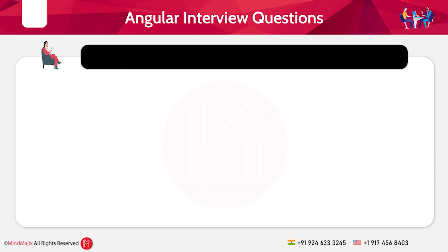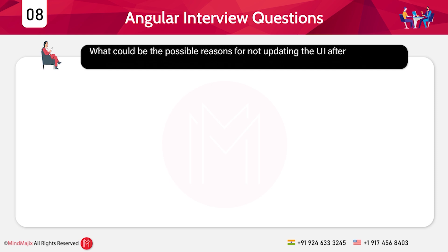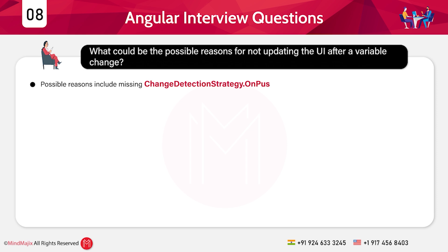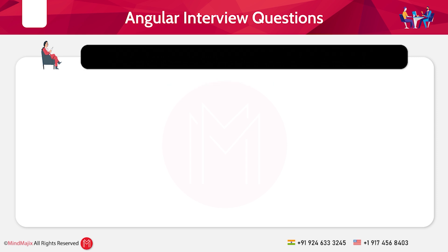The eighth question: What could be the possible reasons for not updating the UI after a variable change? Possible reasons include missing change detection strategy OnPush, incorrect reference changes, or asynchronous updates not triggering change detection.